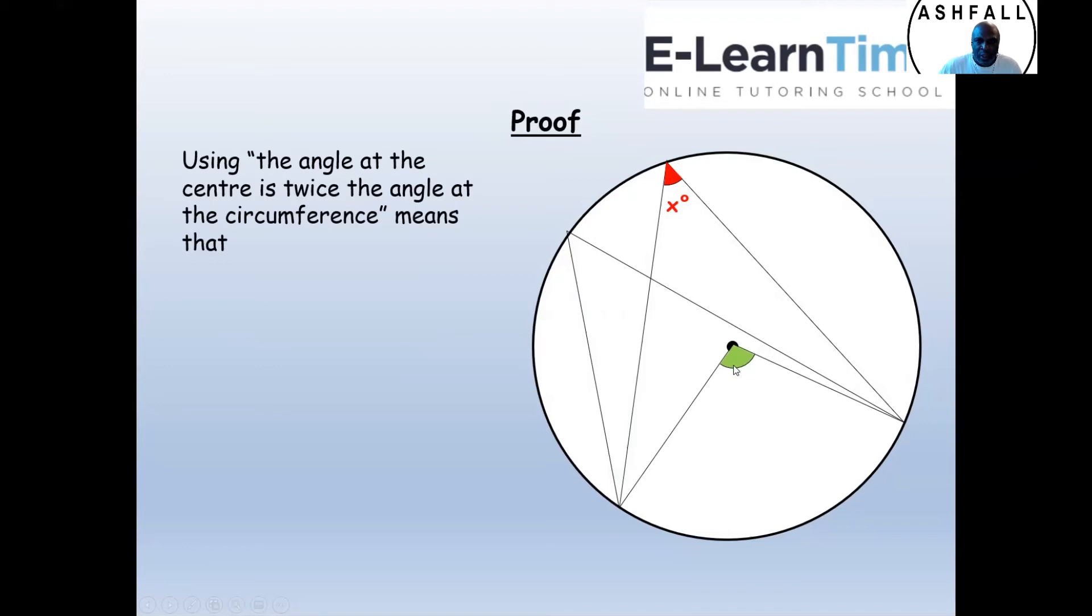the green angle is twice this angle x as you can see there and the green angle is twice this angle y. Therefore angle x is equal to angle y. Angles subtended by the same arc are equal.